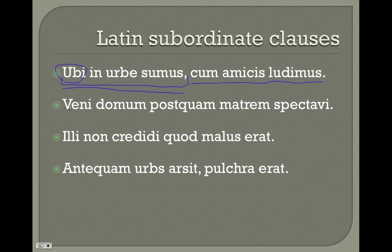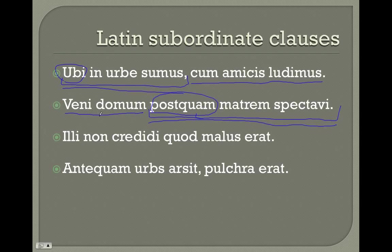Here's another sentence: 'Veni domum, postquam matrem spectavi.' We see 'postquam' — there's our subordinating conjunction. We circle that and look for our verb: 'spectavi.' So from 'postquam' to 'spectavi' is our subordinate clause, showing the time under which the main clause happened. 'Veni domum' is our main clause — 'I came home' — and the subordinate clause 'postquam matrem spectavi' means 'after I saw my mother.'